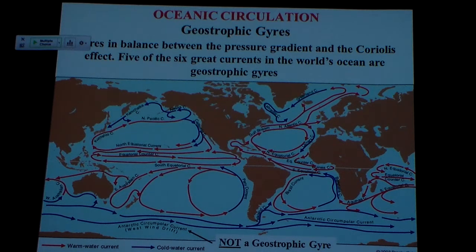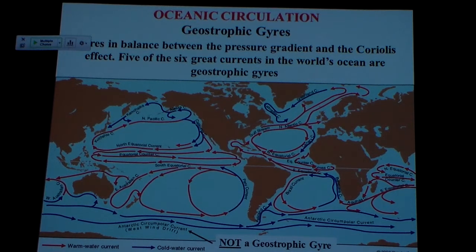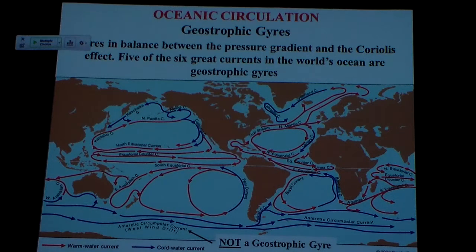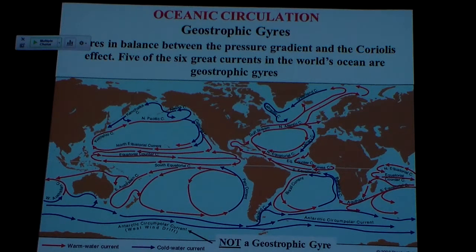Looking at all the gyres throughout the planet: we've got our big gyre in the North Atlantic, breaking up into another gyre in the far north; our big gyre in the North Pacific — both clockwise. We've got our big gyres in the South Pacific, South Atlantic, and Indian Ocean, all running counterclockwise.